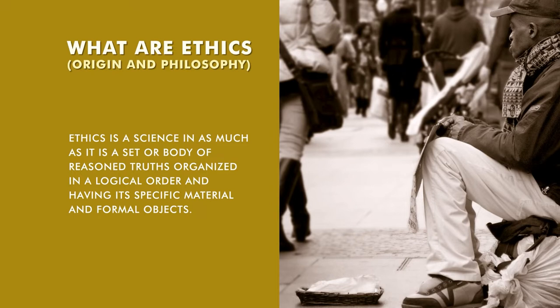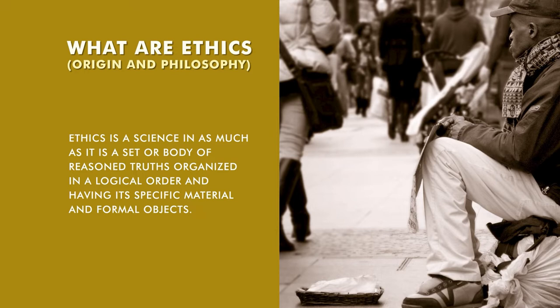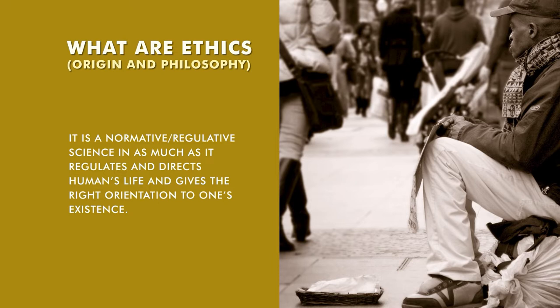Some people treat ethics as a science, in which it is a set of body of reasoned truth organized in a logical order, having its specific material and formal objects. It is a normative or regulative science in as much as it regulates and directs human life and gives the right orientation to one's existence. Ethics are organized — that's why ethics are science. Ethics are the organized or logical order of some dos and doables which are socially, morally accepted in your society and community — basically a research community with a research perspective, an academic community with an academics perspective.